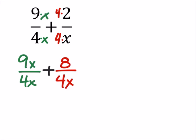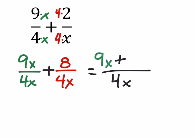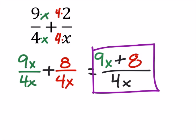In any case, we can continue to simplify this. I've got a 4x in my denominator, and we're going to add these two. We've got 9x plus 8. Since the numerator has two unlike terms, we can't simplify this any further. That right there is our final answer.